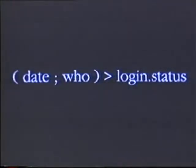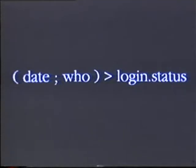Suppose you want to send the output of both of these commands into a file. The parentheses shell metacharacter combines commands together — it combines their output into a single stream. This command line, if executed, will take the output of the date command, then execute the who command, combine both of their outputs, and send it into the file called login.status.